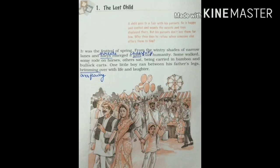Let's begin the story now, The Lost Child. The whole story revolves around a little boy who goes to a fair with his parents and he gets lost there. I am going to explain this chapter in three parts. Part 1: Child goes to a spring fair with his parents.